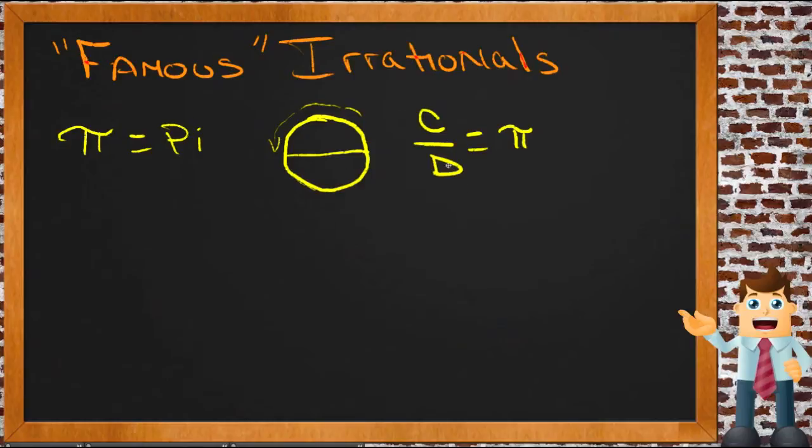And that happens with any circle. No matter how big it is, no matter how small it is, if you take the distance around the outside and divide it by the distance across, pi is the number you come up with. It's that 3.14159 and so on and so forth.